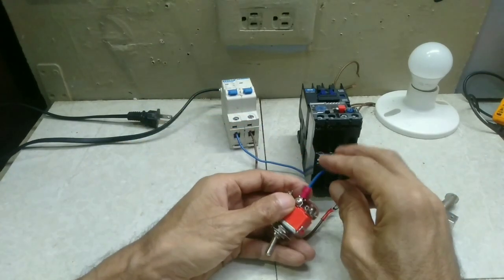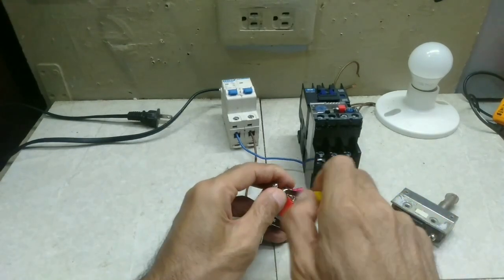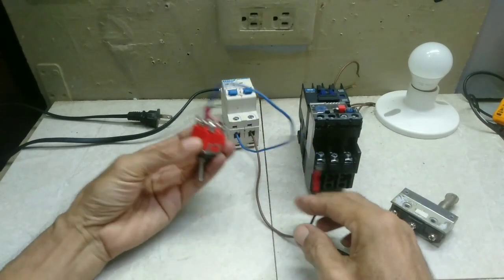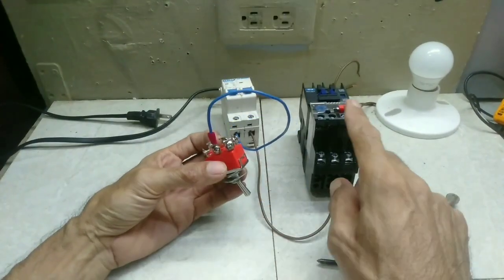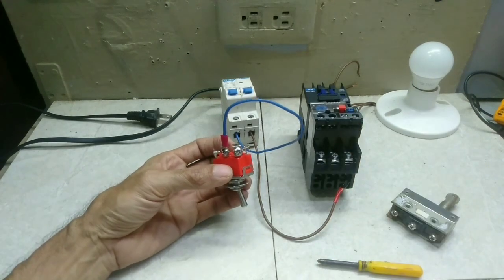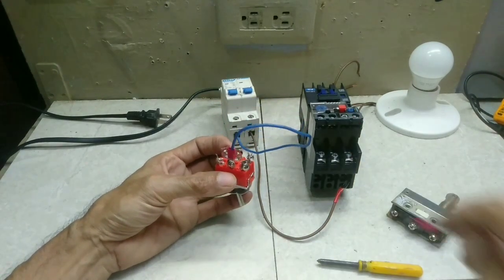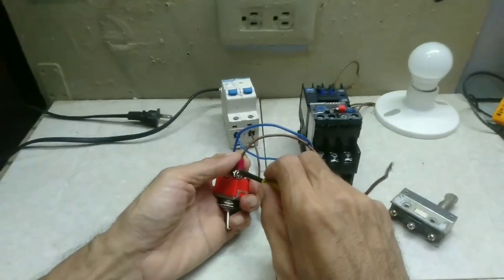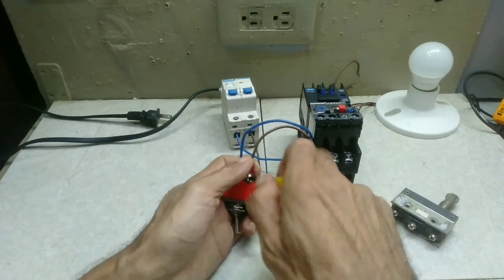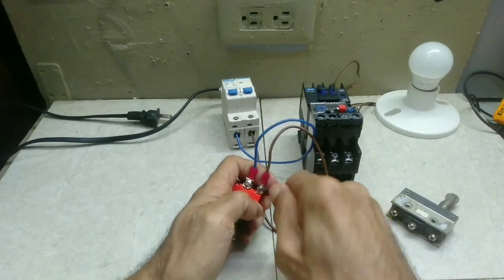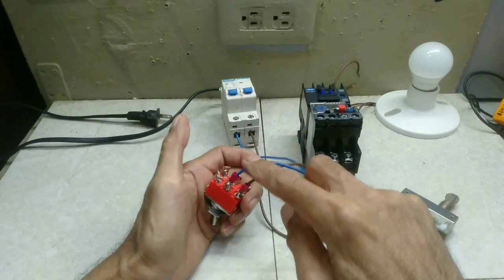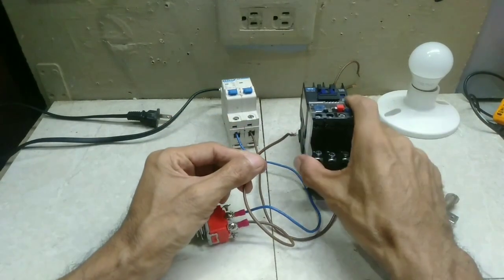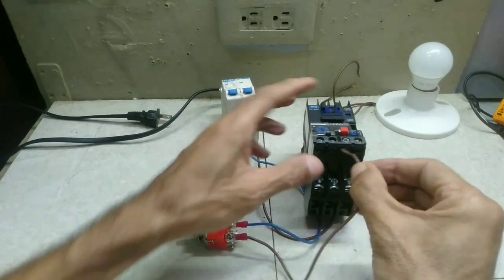From line 1 of the breaker, from the opposite terminal connect to overload 95. Terminate to the overload.